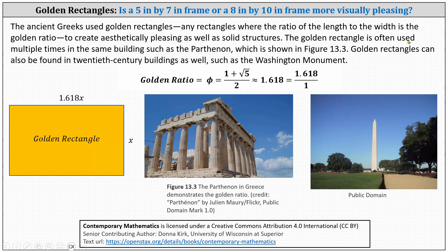The golden rectangle is often used multiple times in the same building such as the Parthenon, which is shown in figure 13.3 below in the middle. Golden rectangles can also be found in 20th century buildings as well, such as the Washington Monument, shown on the right.